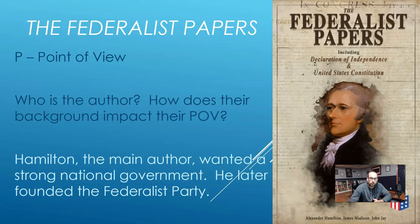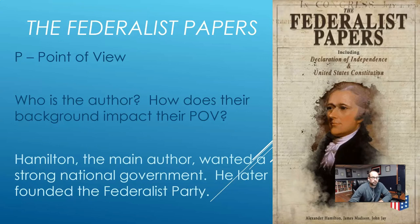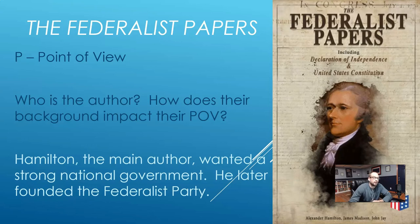Point of view — who was the author, and how does their background impact their point of view? Hamilton, who was the main author, wanted a strong national government. He felt that a strong national government was the only way to join all of the newly formed states together. He knew that if the states continued to operate under the Articles of Confederation, the United States would be weak and wouldn't be united. He felt that joining them under one Constitution was their best chance of success. Hamilton would later go on to found the Federalist Party, which advocated a strong government, against Thomas Jefferson's Democratic-Republicans who wanted stronger state governments.